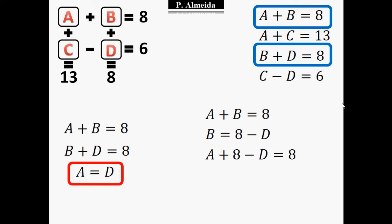But I know that A plus B equals 8, so I'm going to say A plus 8 minus D, which is the B, equals 8. And I automatically get that A minus D equals 8 minus 8, which gives me 0, and therefore A equals D.